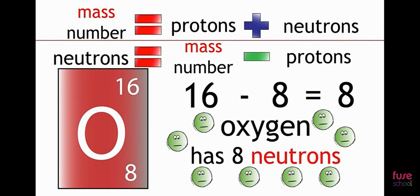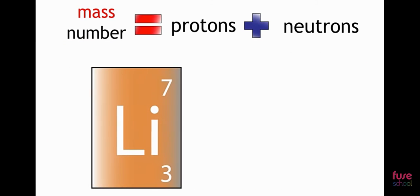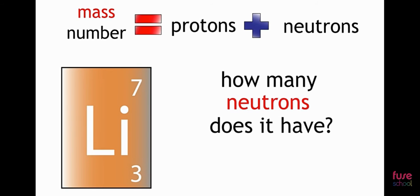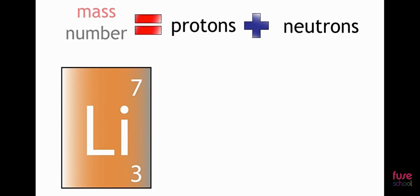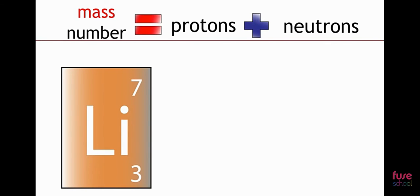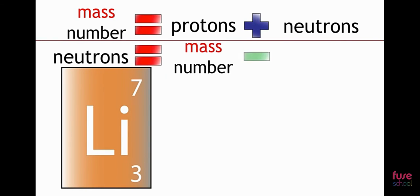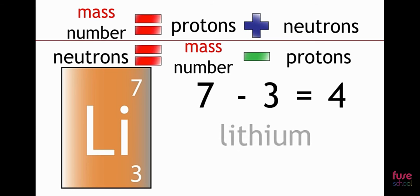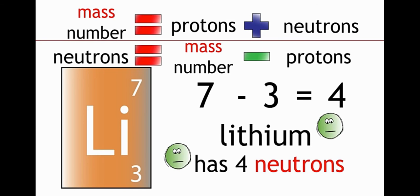Let's take another example. Lithium has a mass number of 7 and has 3 protons. How many neutrons does it have? Mass number equals protons plus neutrons. We can rearrange this to show that neutrons equals mass number minus protons. Neutrons equals 7 minus 3 equals 4. Lithium therefore has 4 neutrons.